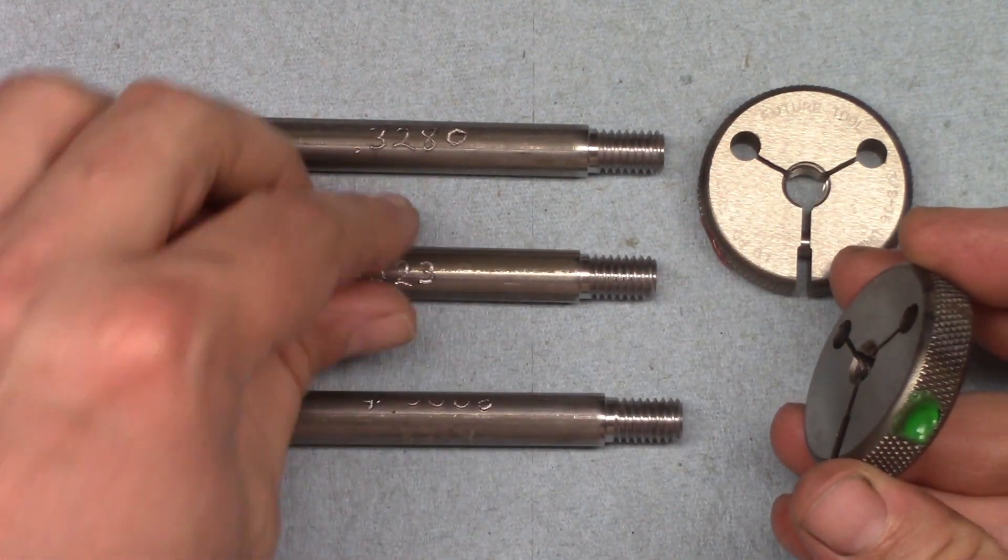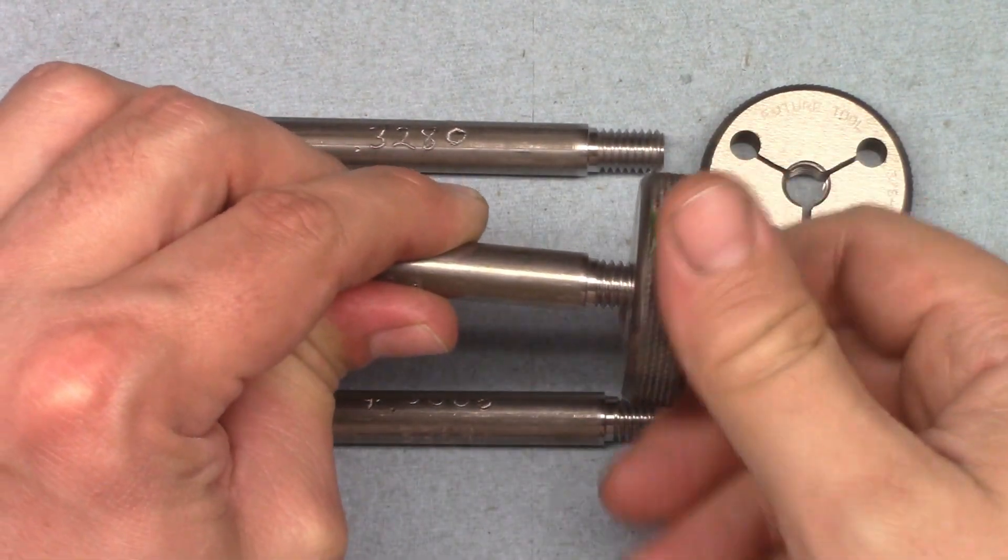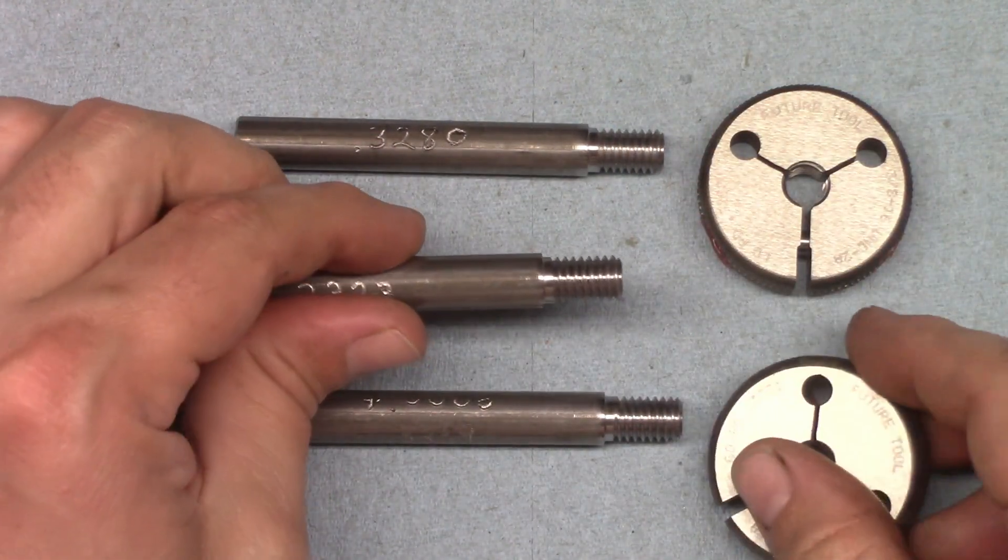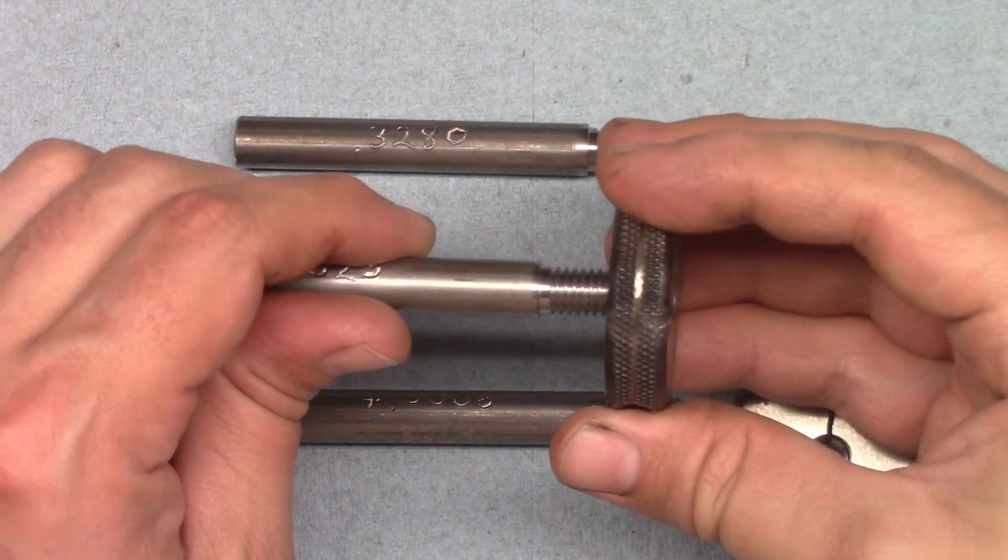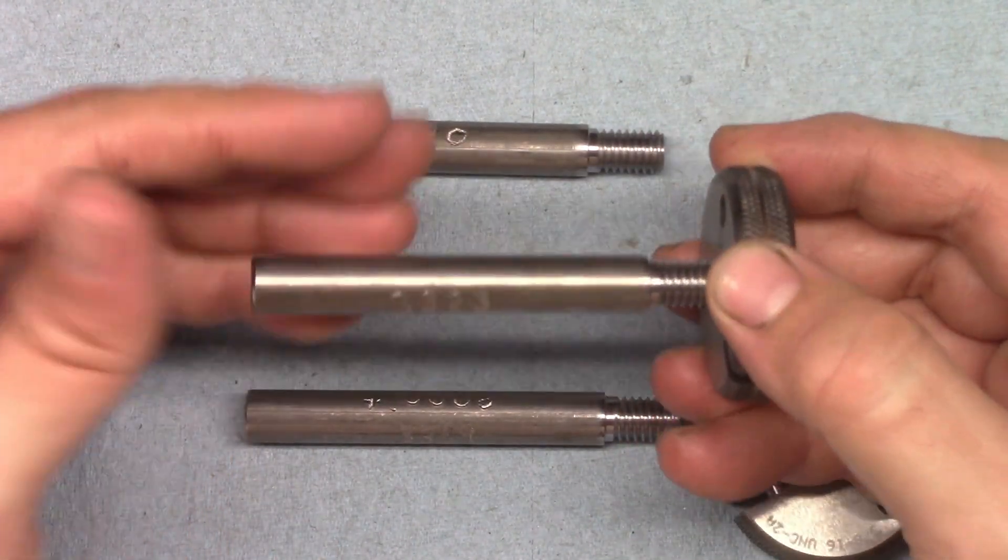If it does thread on, the part is smaller than the high end of the pitch diameter range, although that doesn't necessarily mean it's a good part. You'll need to check it with the no-go gauge next. If that gauge does not thread on, you know the part is larger than the low end of the range and it should be in spec.